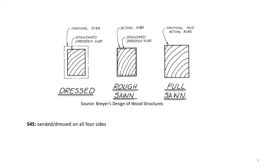Now let's connect this back to nominal versus actual dimensions. A 2x4 might be exactly 2 inches by 4 inches after it's sawn, but dressing lumber inevitably reduces its dimensions slightly. We can see this in the graphic showing the difference between nominal and actual sizes for three types of lumber: dressed, rough sawn, and full sawn. Dressed lumber has been both seasoned and dressed — it lost some area from seasoning-related shrinkage and from the sanding or planing in the dressing process, so the nominal versus actual dimensions are quite different.